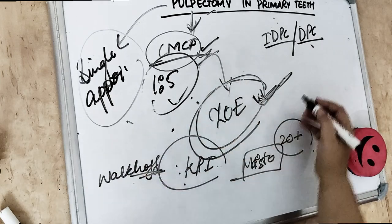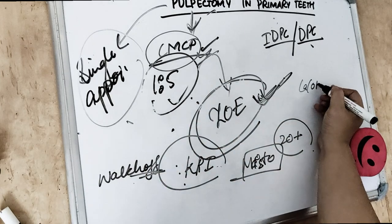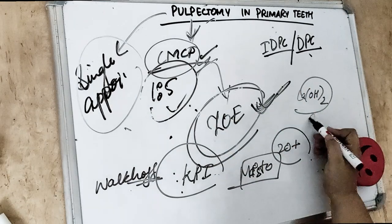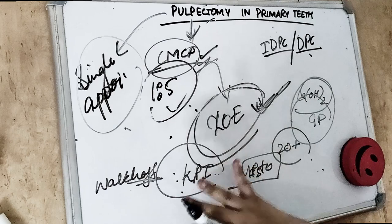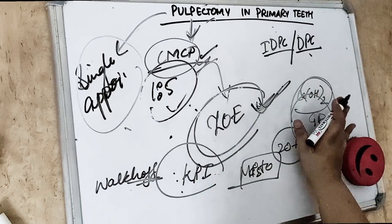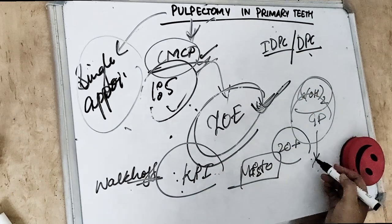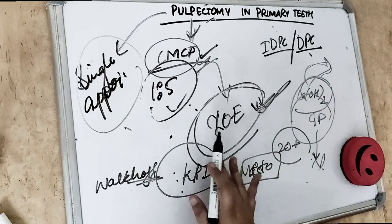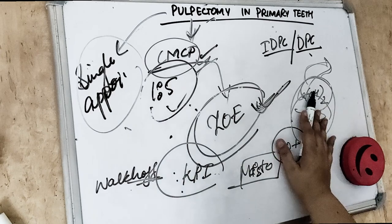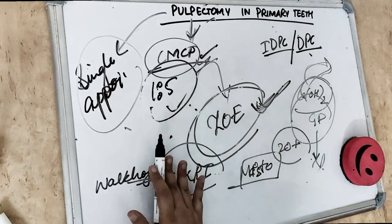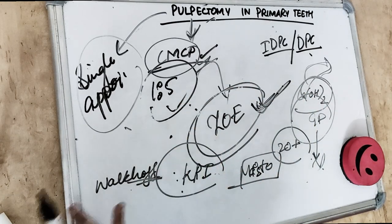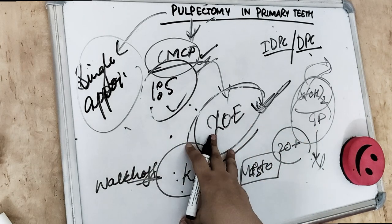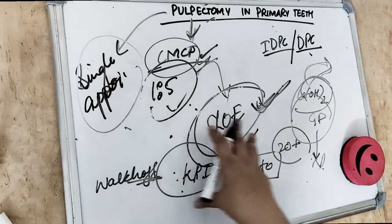Remember that calcium hydroxide and gutta-percha are never used for primary teeth. We never use either of these agents because gutta-percha is non-resorbable and calcium hydroxide causes internal resorption of the teeth. That is why we don't use these materials for pulpectomy. In pulpectomy, we remove the entire pulp — from the pulp chamber and the root canals.